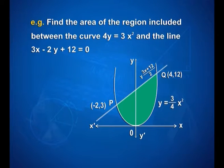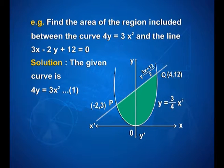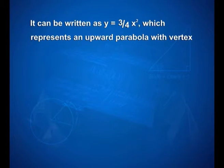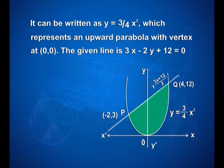One more example: find the area of the region included between the curve 4y is equal to 3x square and the line 3x minus 2y plus 12 is equal to 0. The given curve 4y is equal to 3x square can be written as y is equal to 3/4 x square, which represents an upward parabola with vertex at the origin (0, 0). We have an upward parabola with point P at (minus 2, 3) and point Q at (4, 12), and the line y is equal to (3x plus 12)/2.